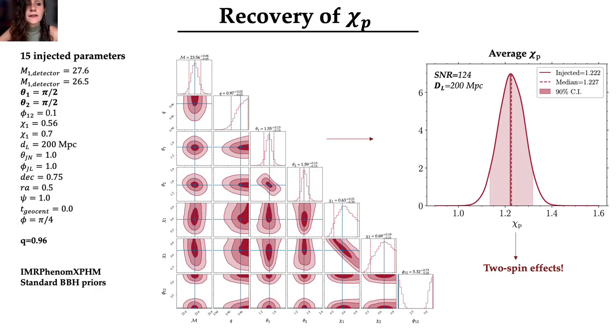Here, I am showing an example of an injection that I did. We chose an injected value for all the 15 parameters needed to describe a binary black hole merger, and then run the parameter estimation analysis. In particular, we chose a very high SNR with a luminosity distance of 200 Mpc, tilt angles of 90 degrees, and a mass ratio near unity, so that the injected value for the average χp is 1.22.